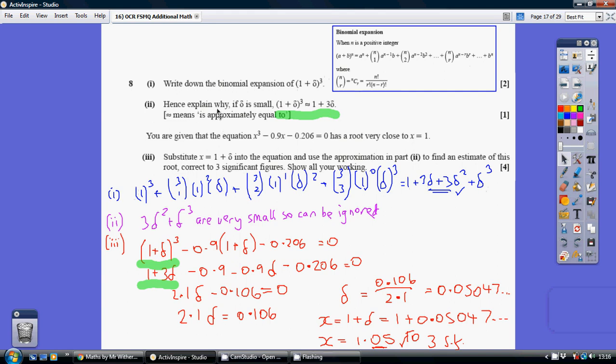Now, for part D, we've been asked to explain when, if delta is small, that 1 plus delta all cubed is roughly equal to 1 plus 3 delta. Well, the thing is, if delta is very small, when you start squaring it, or even cubing it, they're just becoming absolutely negligible, so you can exclude those.